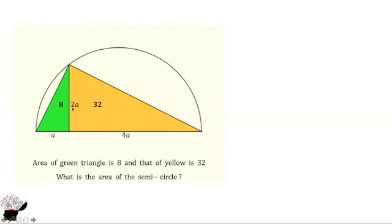So we have the height as 2A, the base of the green triangle as A, and the base of the yellow triangle as 4A. Let's use the smaller green triangle: half times A times 2A equals 8. The 2 cancels, giving us A squared equals 8. Similarly, using the larger yellow triangle gives the same value for A squared.